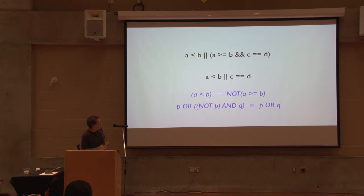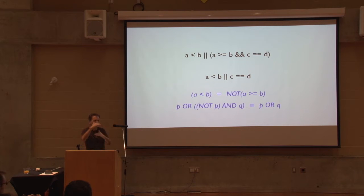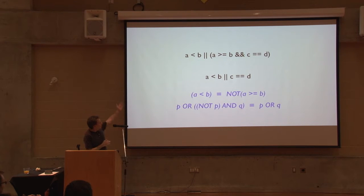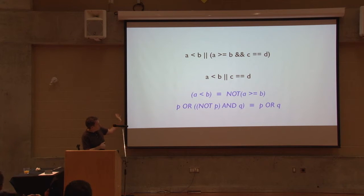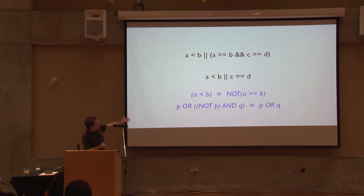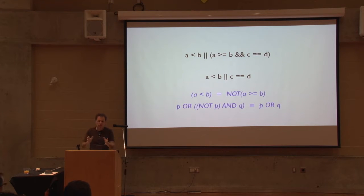What we're doing is substituting. One of the things I said is that A less than B is equivalent to the inverse of A greater than or equal to B. And somehow we reasoned out that anytime you have an expression of the form P or (not P and Q), it's equivalent to just P or Q, because the not-P part doesn't matter. So that's substitution - one way we can actually make things simpler is to substitute a simpler thing for a more complex thing.